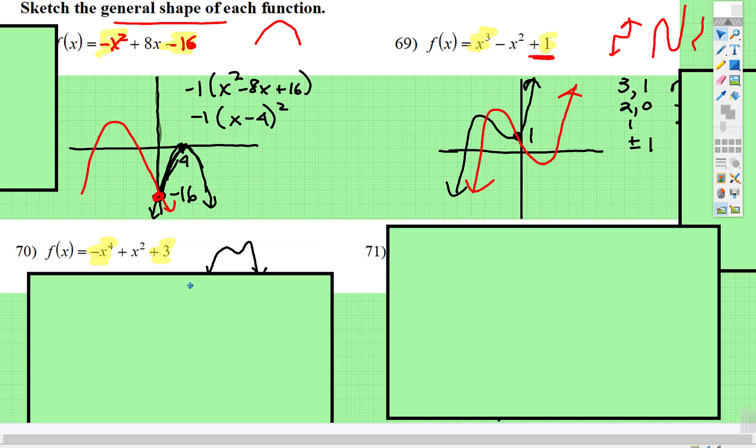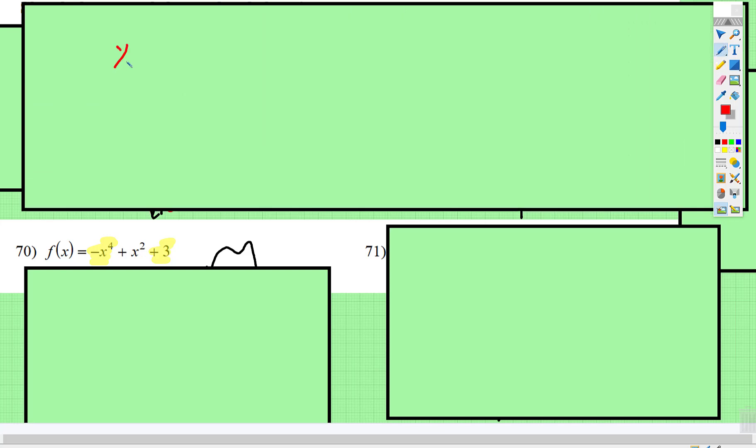The next example is x to the 4th. Here's a good thing to remember. All x to the evens look like some version of a parabola.